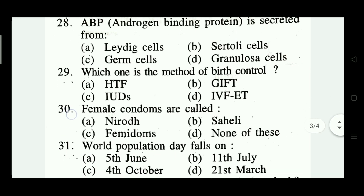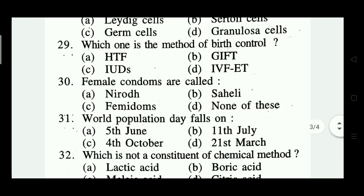Question number twenty-nine: which one is a method of birth control? Options: IVF, GIFT, IUDs, ET. Which one is correct? Option C — IUDs is the correct answer.